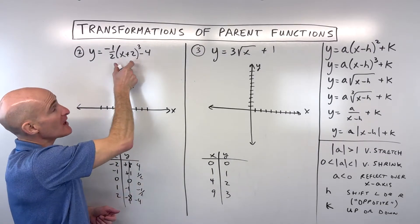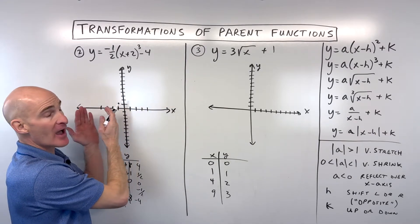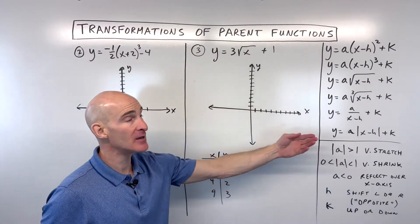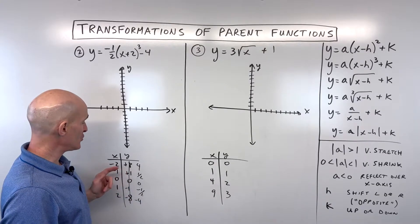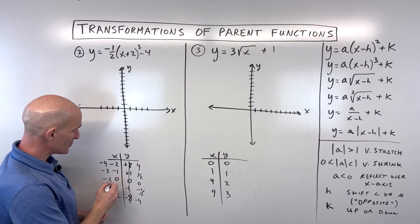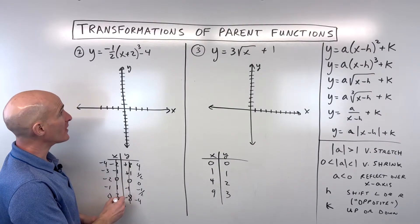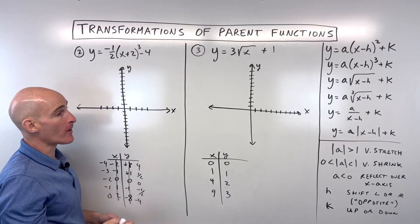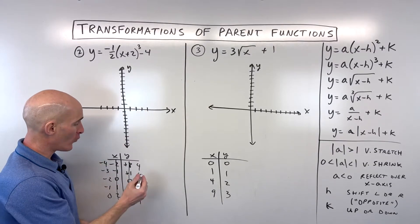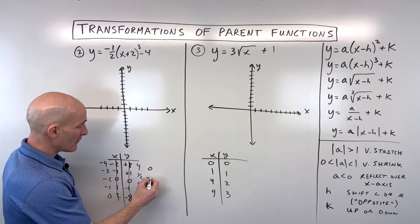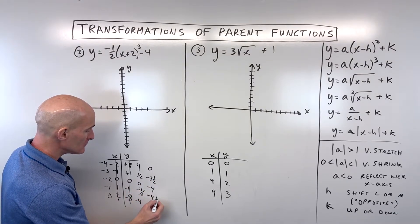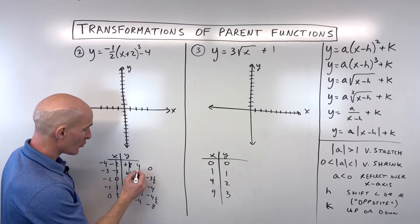The plus 2 is grouped with x, so it has the opposite effect — instead of shifting right 2, it shifts left 2. Subtract 2 from all x values. The minus 4 is not grouped with x, so it affects y values with the same effect: shift down 4. Subtract 4 from all y coordinates.